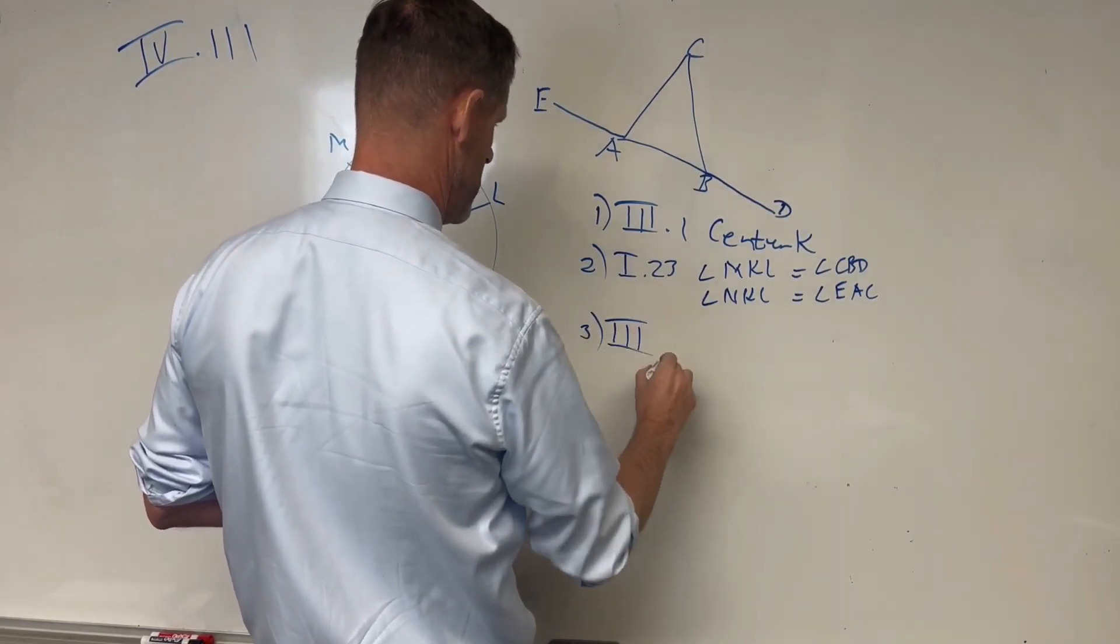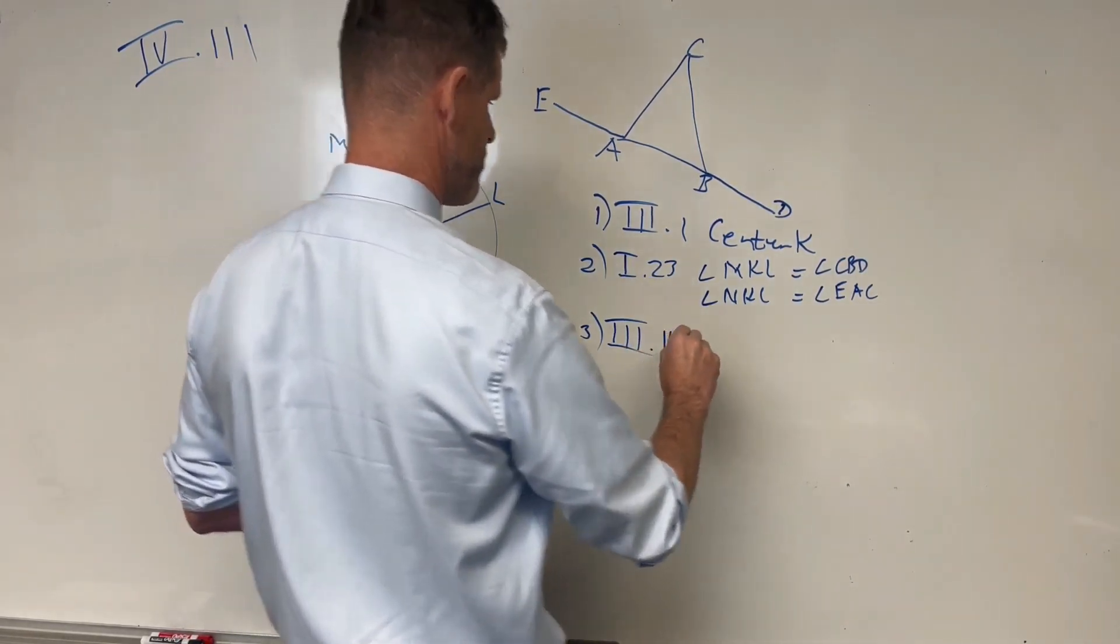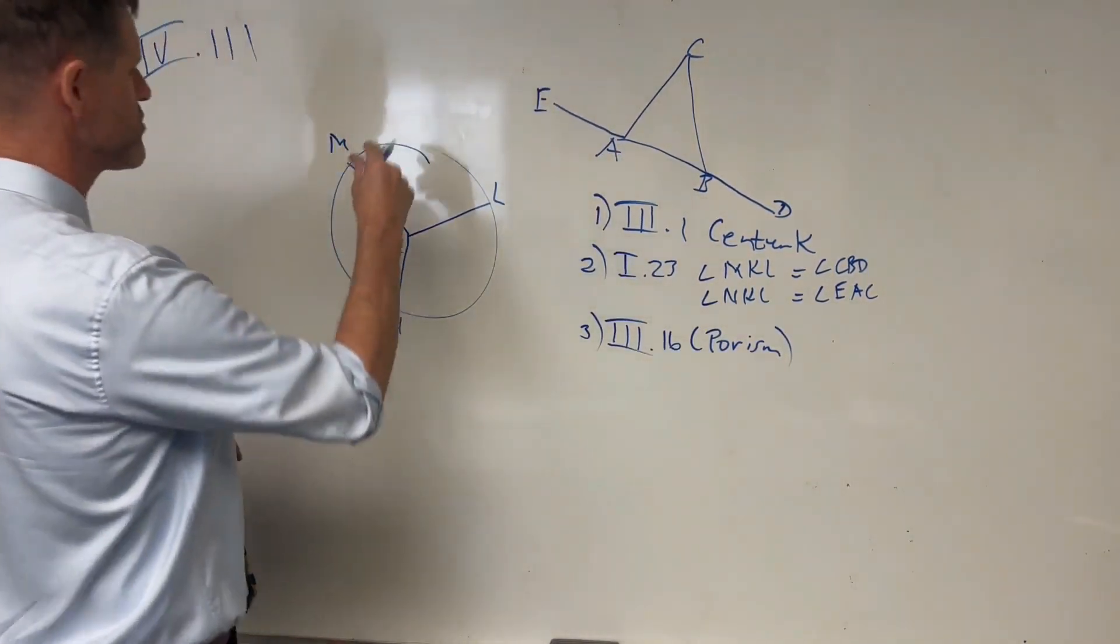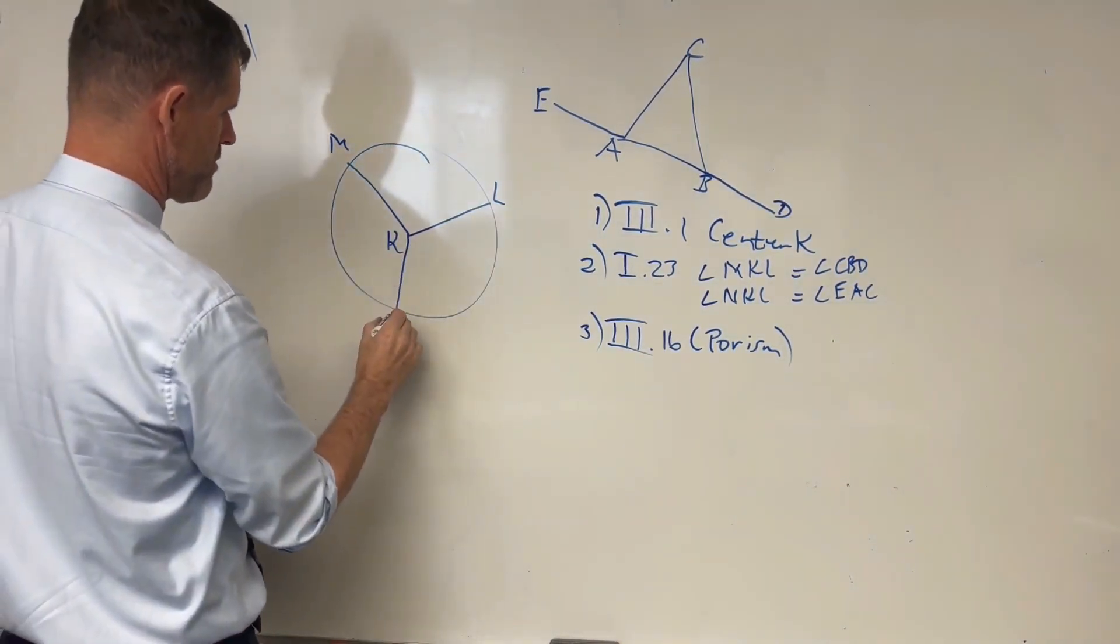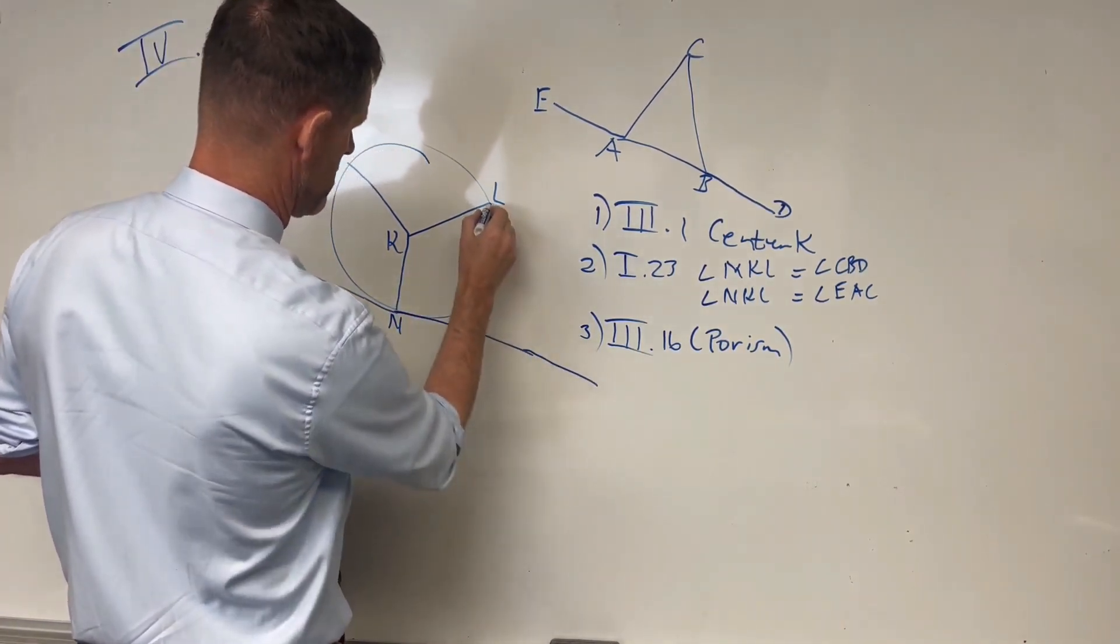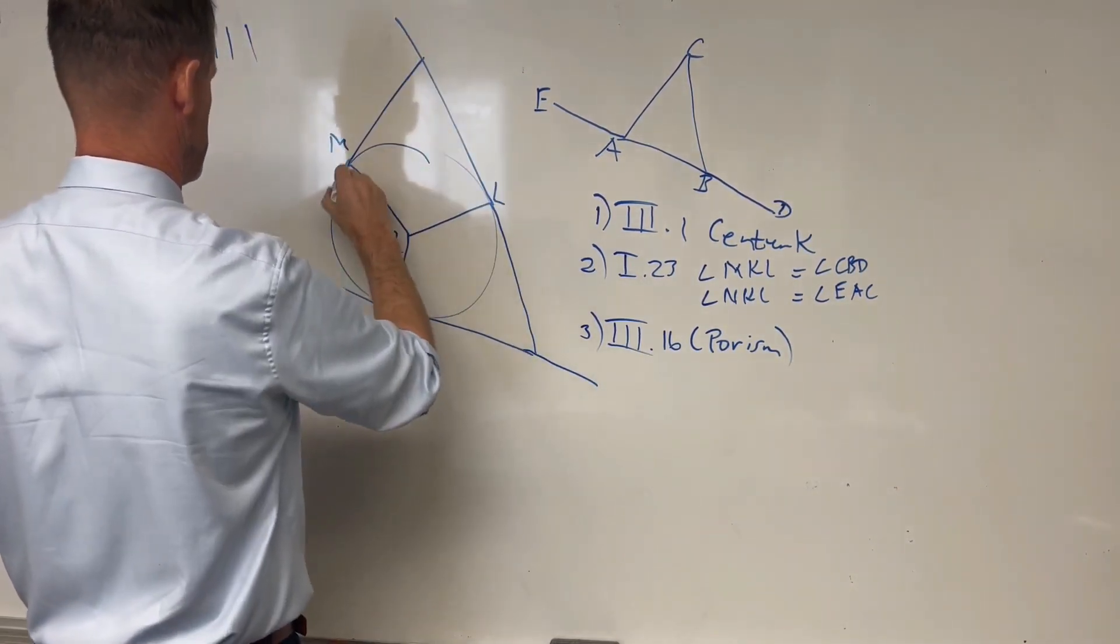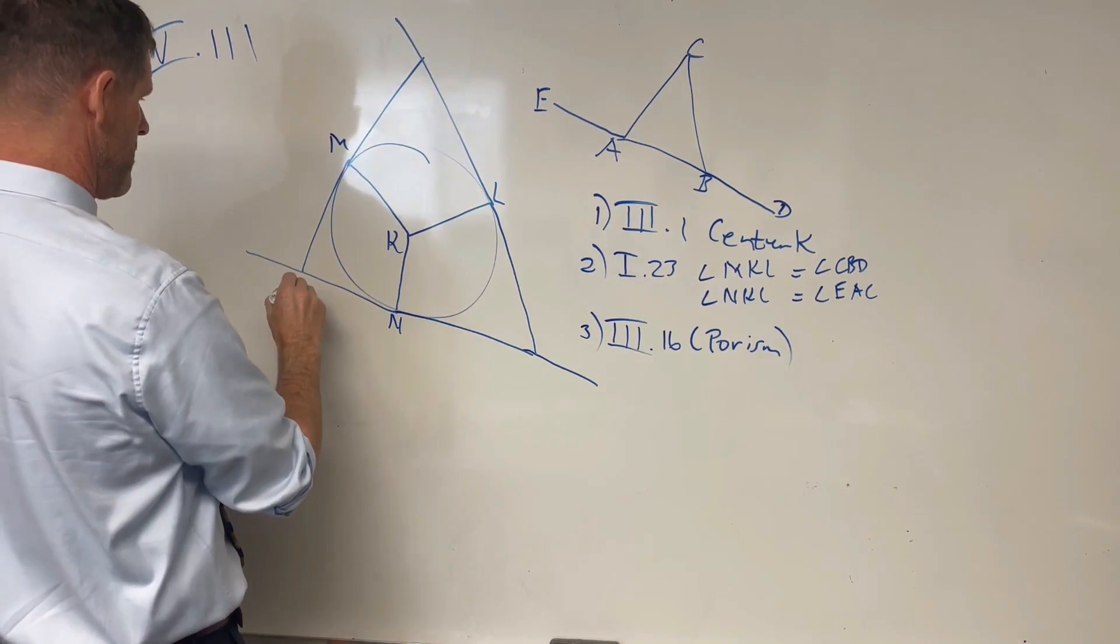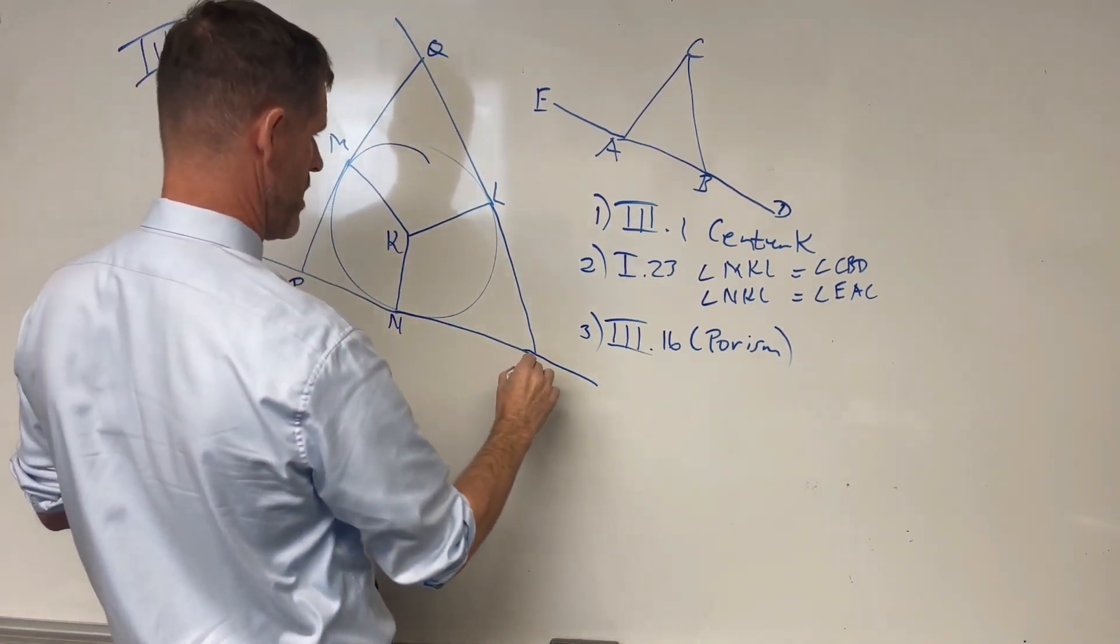And then utilizing the porism from Prop 16 of Book 3, we draw lines from outside the circle that are tangent to the circle at points M, L, and N. And we'll call this triangle that's been made here, we'll call that P, Q, and R.